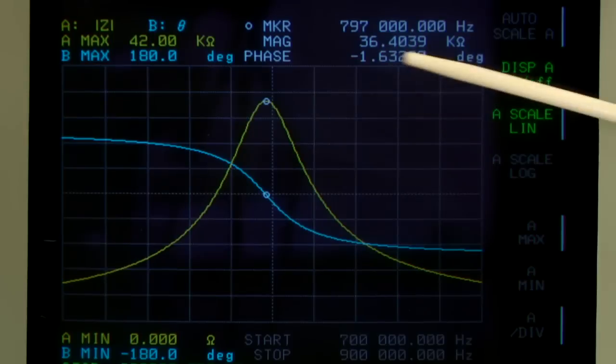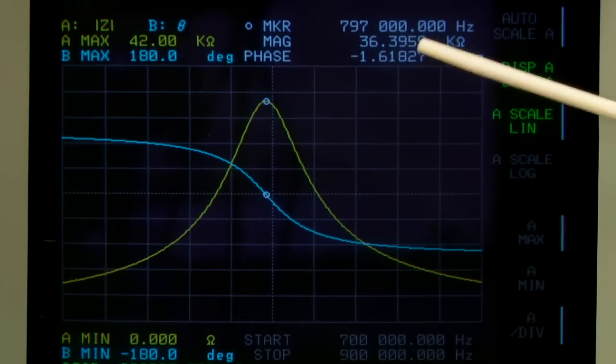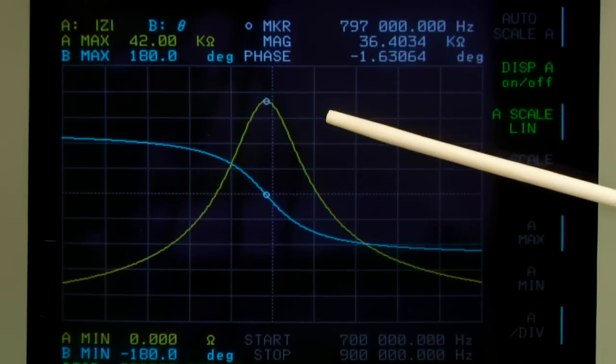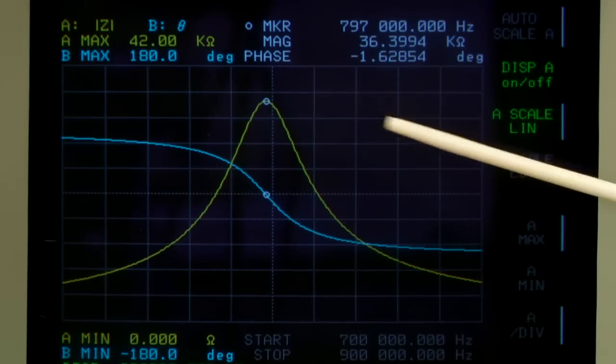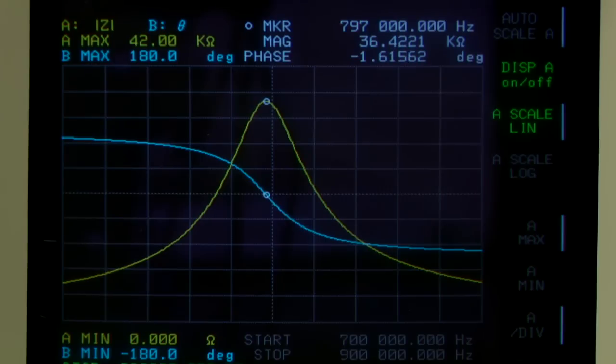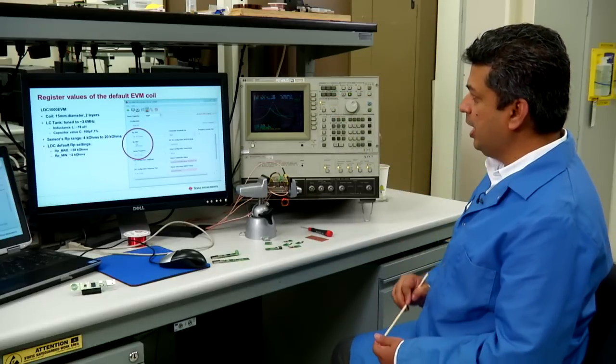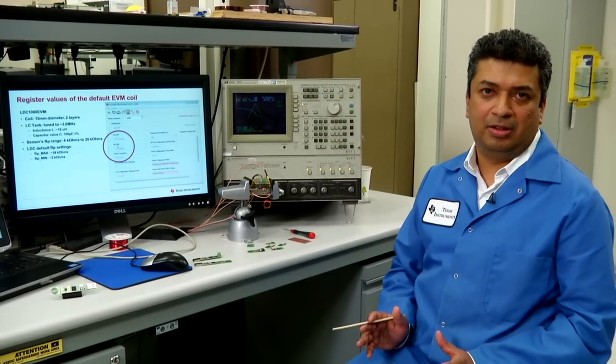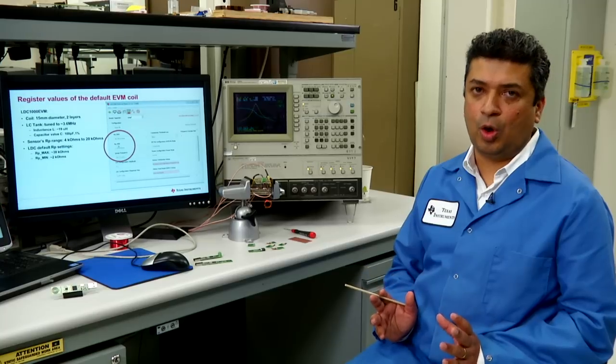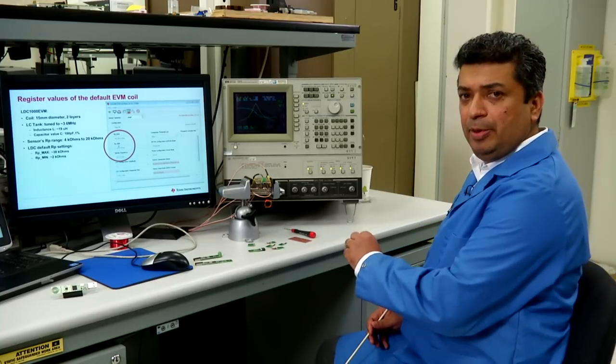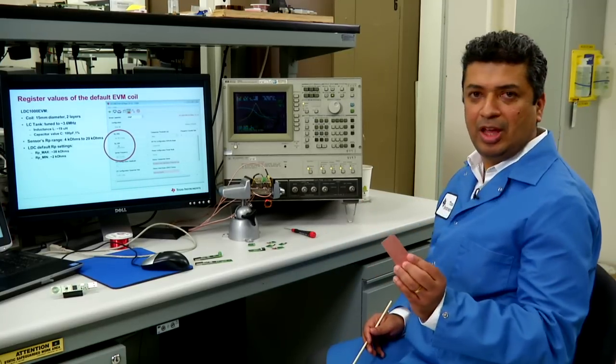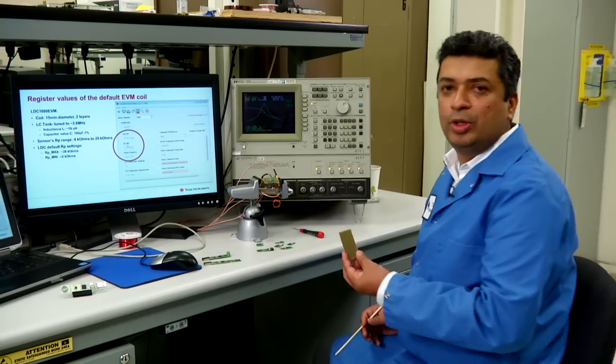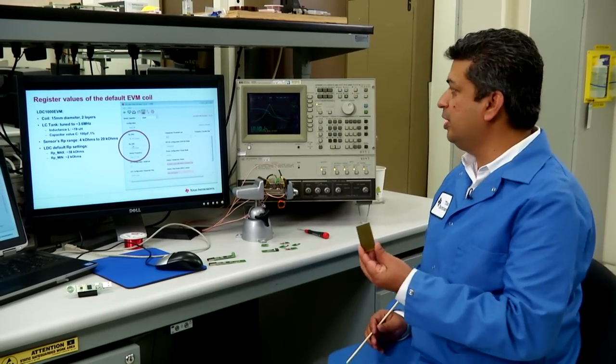So if I look at the screen, the resonance occurs at 797 kilohertz and the resonant impedance at that frequency is 36.4 kilo ohm. I note this measurement down because this is the resonant impedance with no object in the vicinity of the coil. The next step, I take an object and move it close to the coil and note down the change of resonant impedance.